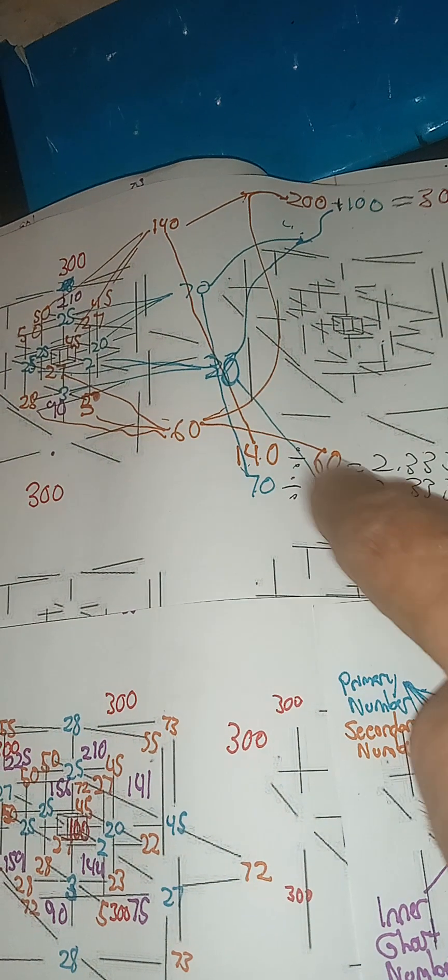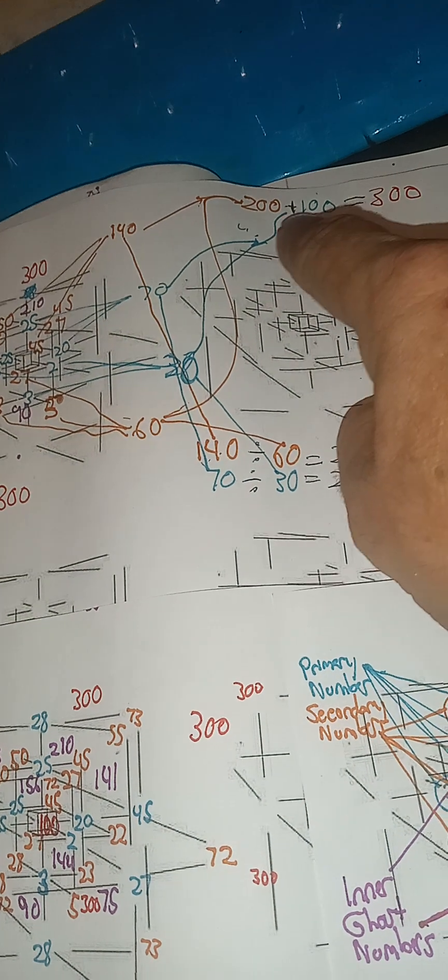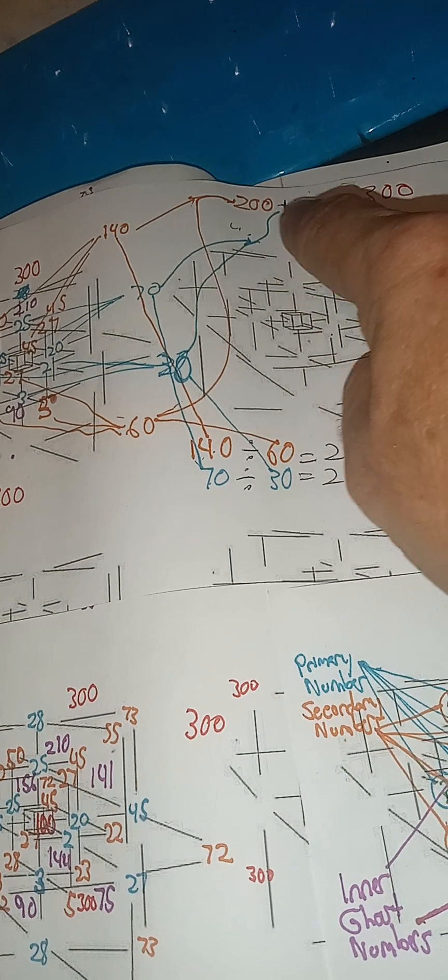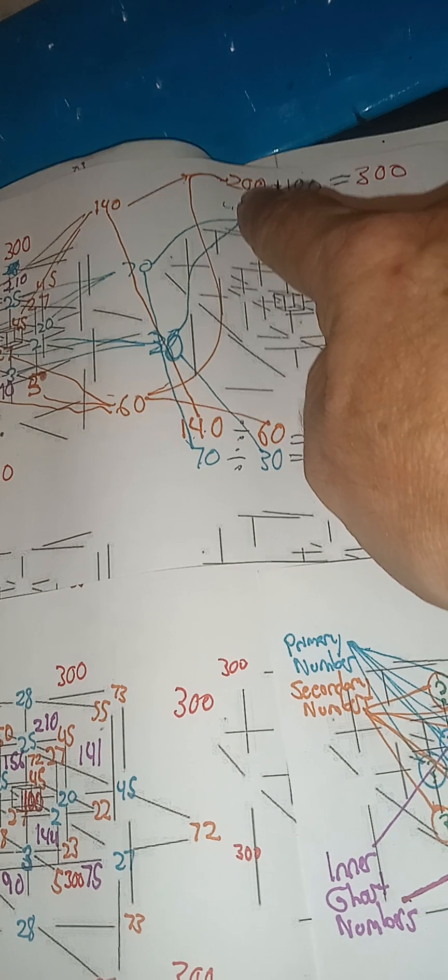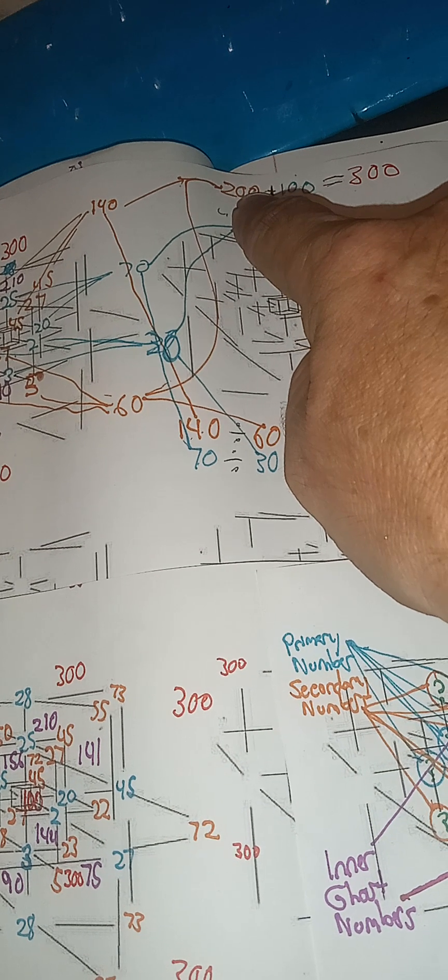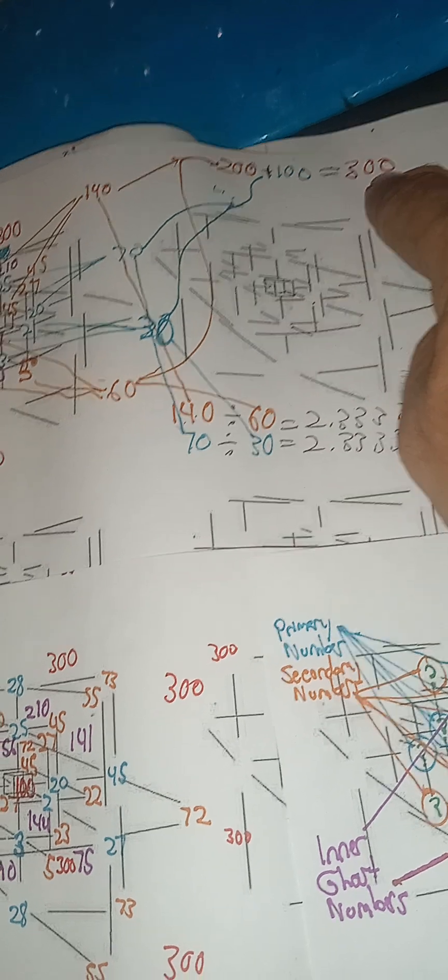The bottom and top of this primary numbers is 100. And 200, it's always going to be the same in every magic ghost number cube. The secondary numbers are always going to be twice that of the primary numbers to get the outer ghost number.